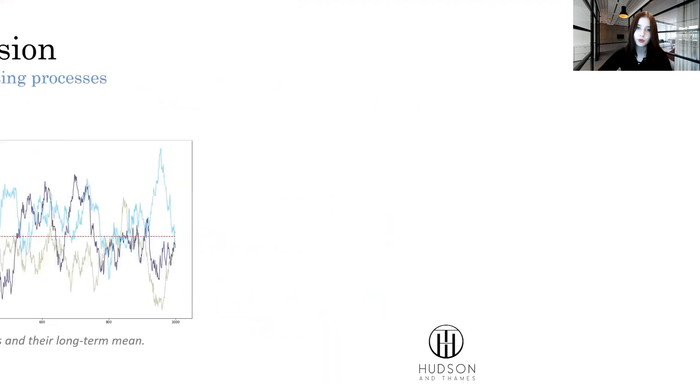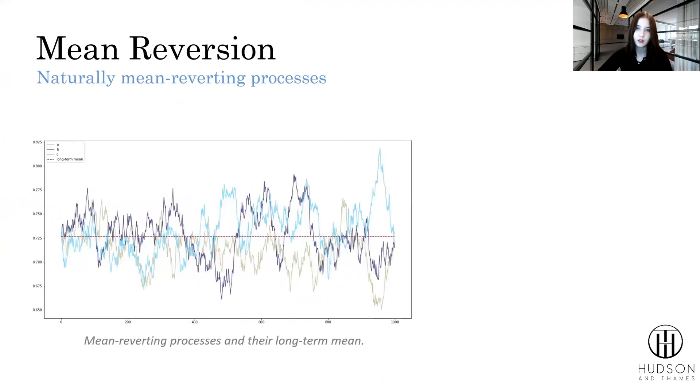We start with mean reversion, the quality of a process that stands for its tendency to revert to a long-term mean with the passage of time, as you see on the picture example on this slide.